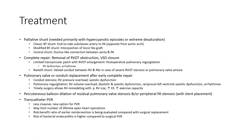Treatment options include palliation and management of superior pulmonary valve stenosis and peripheral PA stenosis via transcatheter pulmonary valve replacement. Transcatheter pulmonary valve replacement may limit the number of lifetime open-heart operations. The risk-benefit ratio of all interventions is being evaluated, with repair involving pulmonary valve replacement carrying a high risk of bacterial endocarditis compared to surgical pulmonary valve replacement.